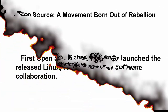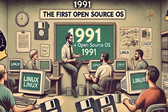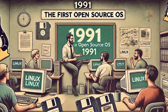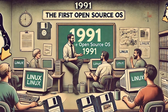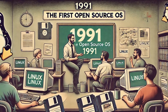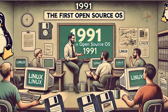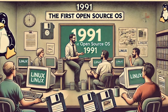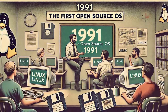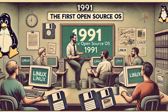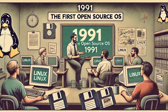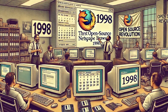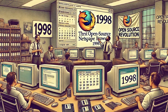The first open source operating system, Linux, was introduced in 1991 and is used across the entire world in the software field. The first open source browser was introduced in 1998.